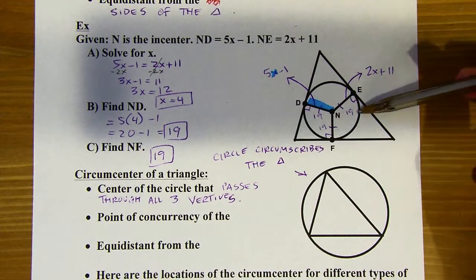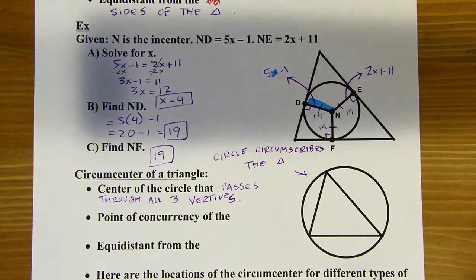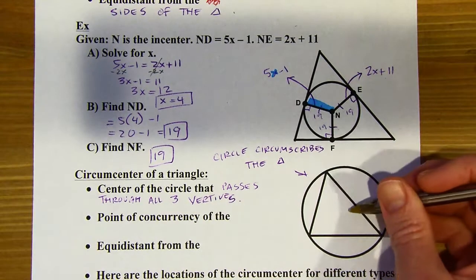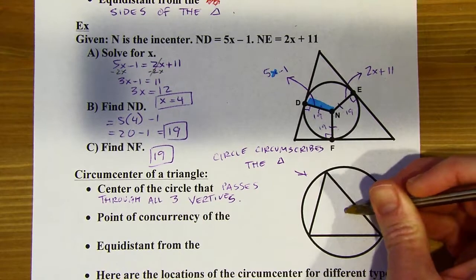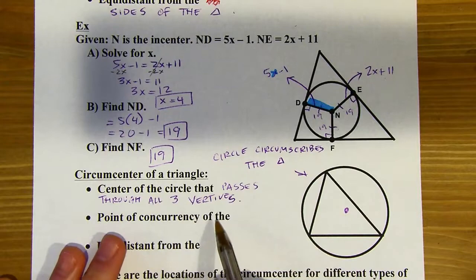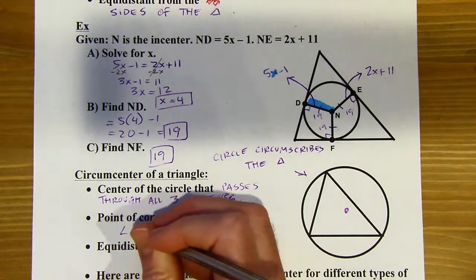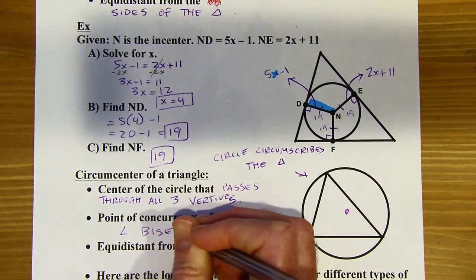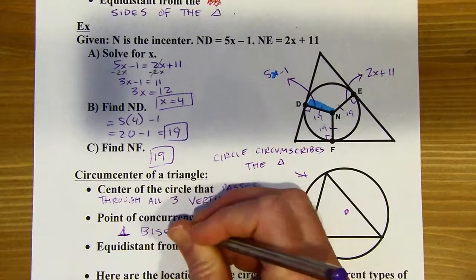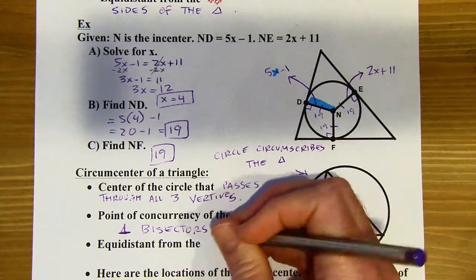Think about 'circumnavigate the earth' — it means going around the outside, like Magellan. So the circumcenter is the center of this circle. It's going to be the point of concurrency of the perpendicular bisectors of the sides — not the angle bisectors. I keep glancing at the wrong point of concurrency — the perpendicular bisectors of the sides.